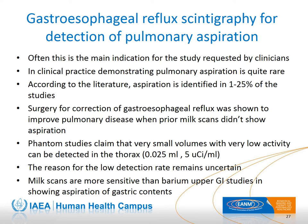The gastroesophageal reflux study is one of the nuclear medicine studies that can detect aspiration of gastric contents, and often this is the main indication for the study. However, aspiration is not commonly seen on milk scans even in patients with high clinical suspicion; according to the literature, aspiration is identified in 1–25% of studies, but in most cases around 2%. Despite phantom studies showing that very little activity can be detected in the thorax, there is evidence that improvement in lung disease can be expected in children with suspected aspiration showing reflux but no aspiration on milk scans. Most authors agree that milk scans are still more sensitive than barium upper GI series in showing aspiration of gastric contents.